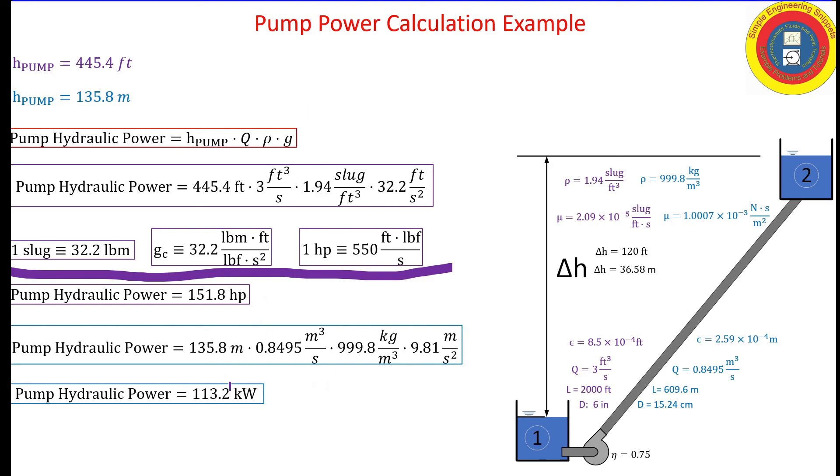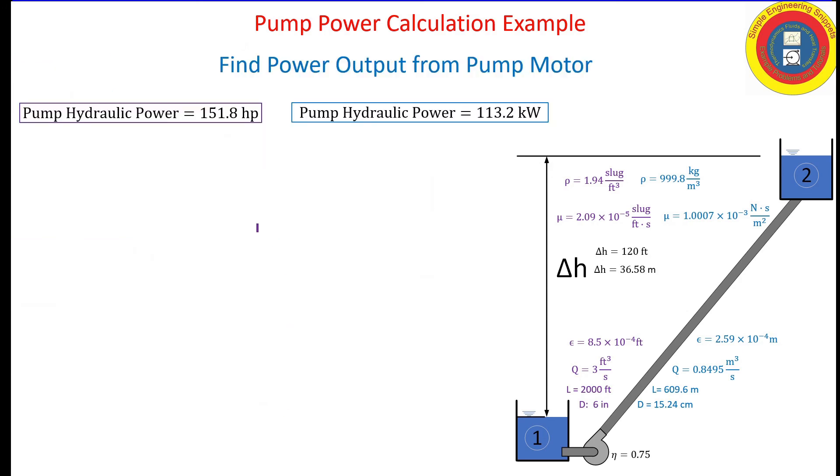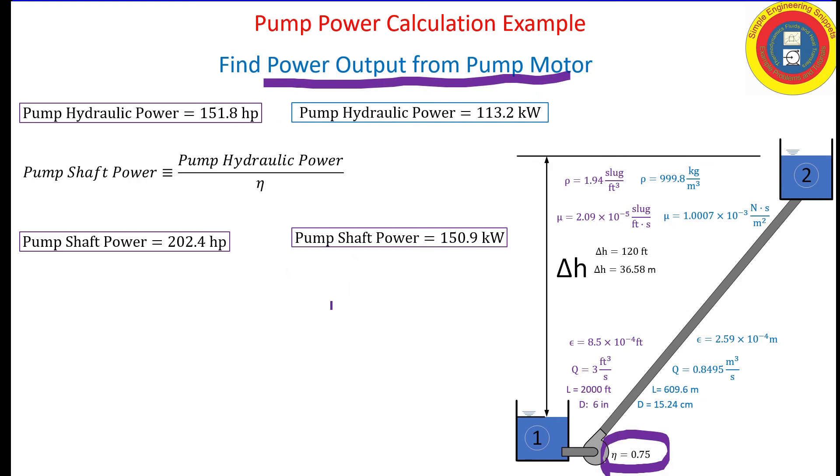That's not really what we were looking for. That is the hydraulic power. That's the power that's necessary for the pump to deliver to the fluid. If the pump is 100% efficient, we would be done. But our pump is 75% efficient. So we need to solve for the shaft horsepower. That's a simple calculation. We obtained in British gravitational units 202.4 horsepower and in SI 150.9 kilowatts.